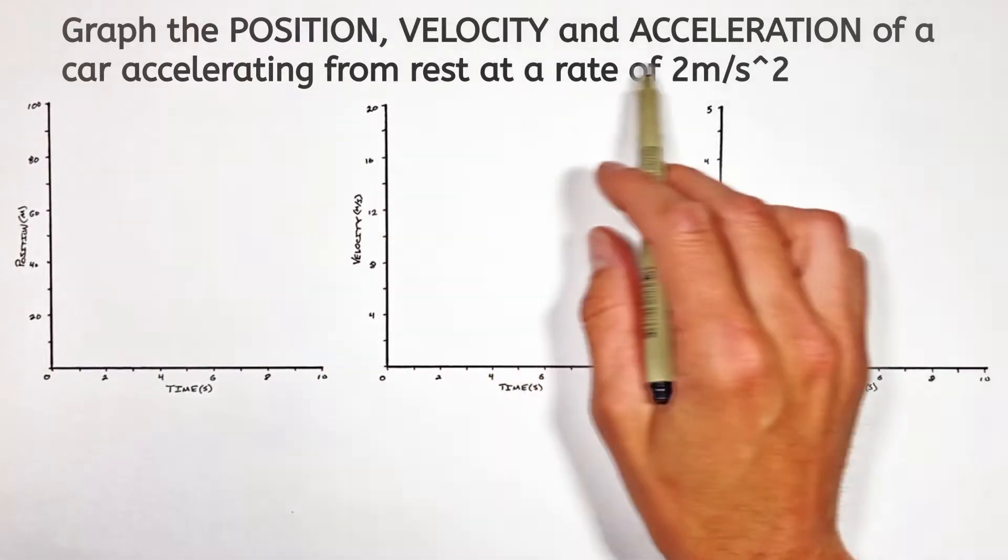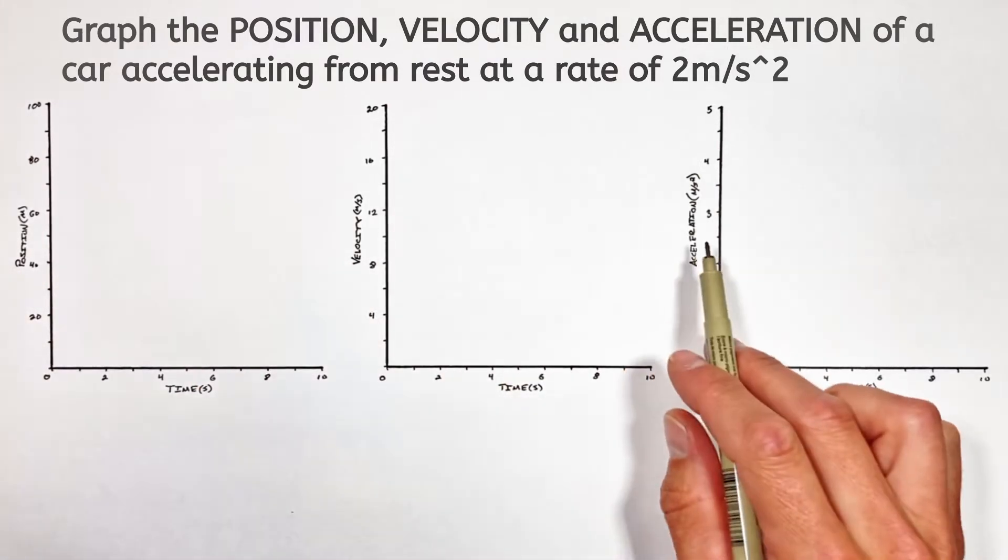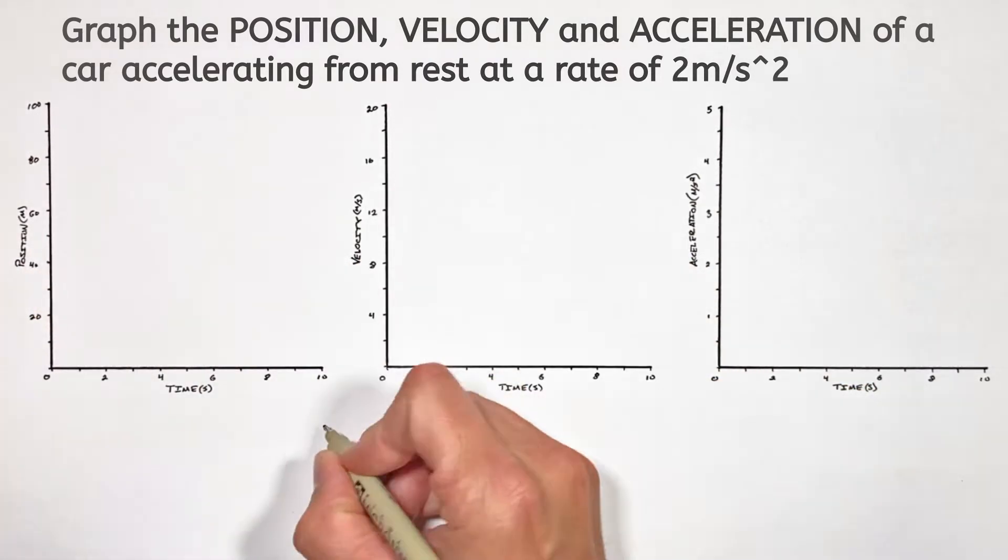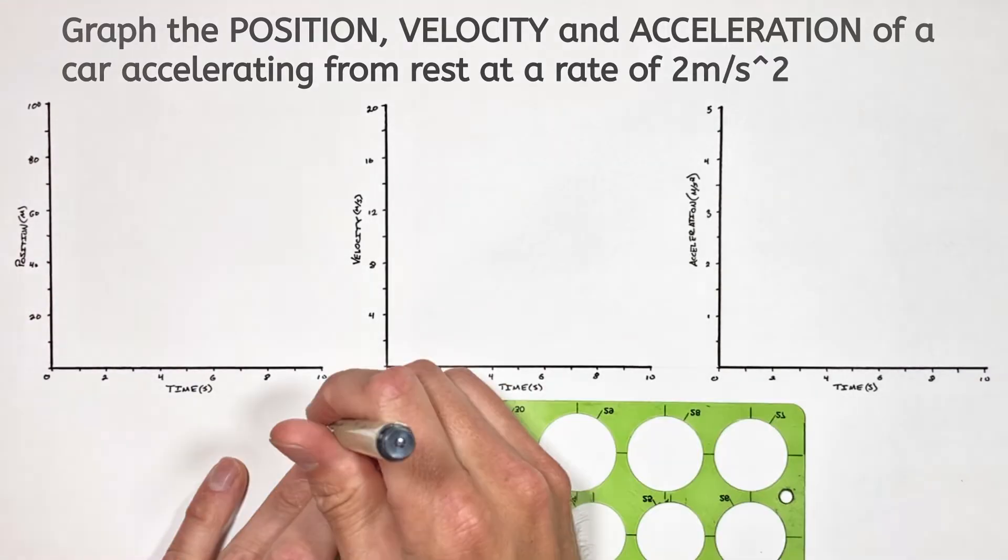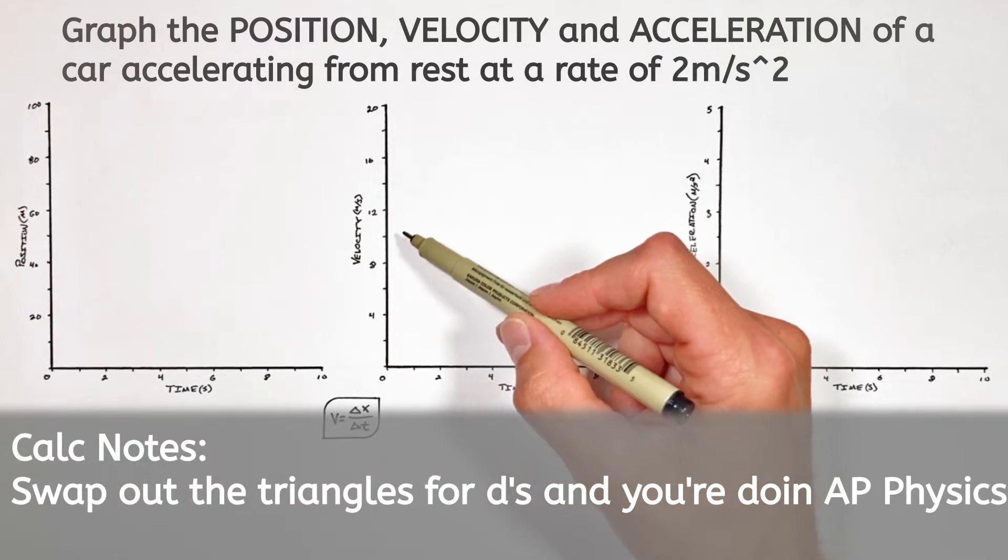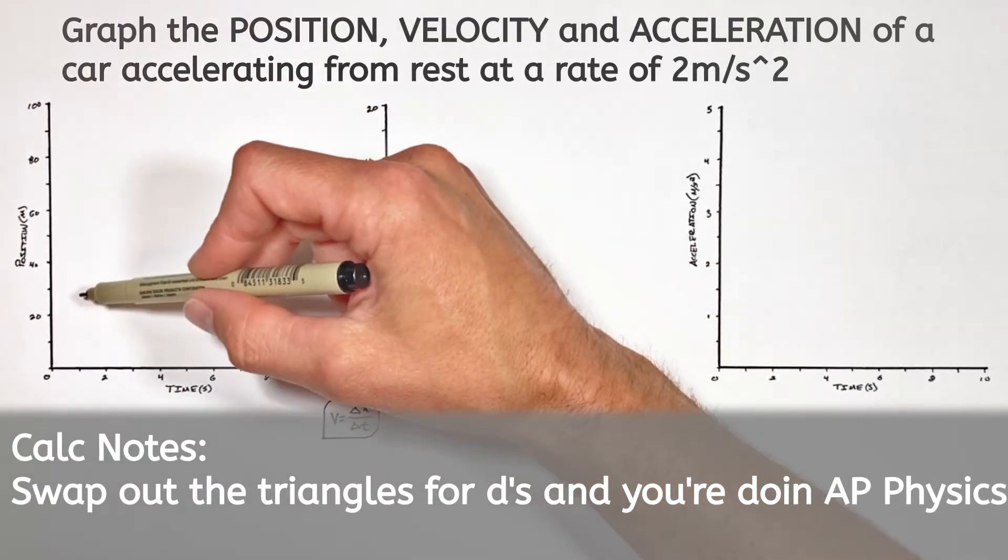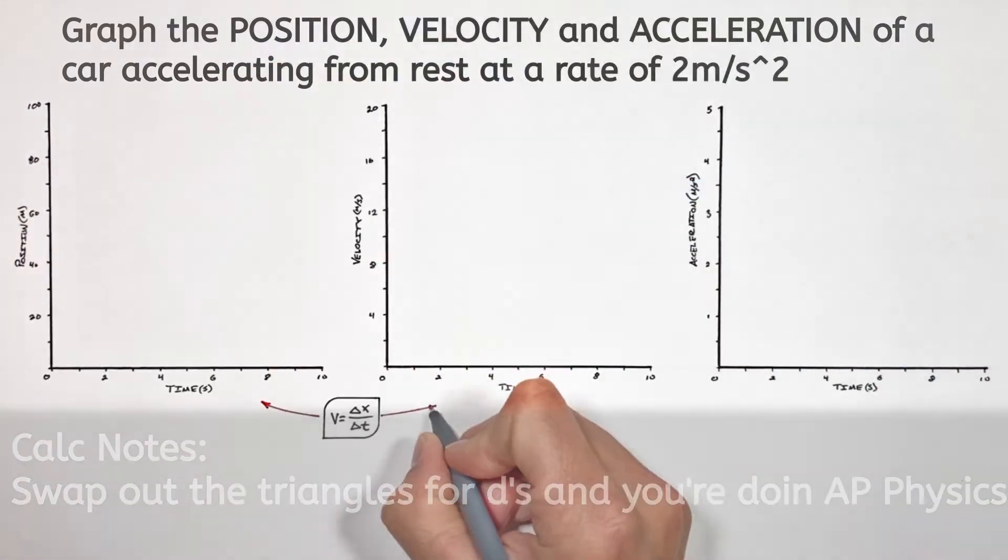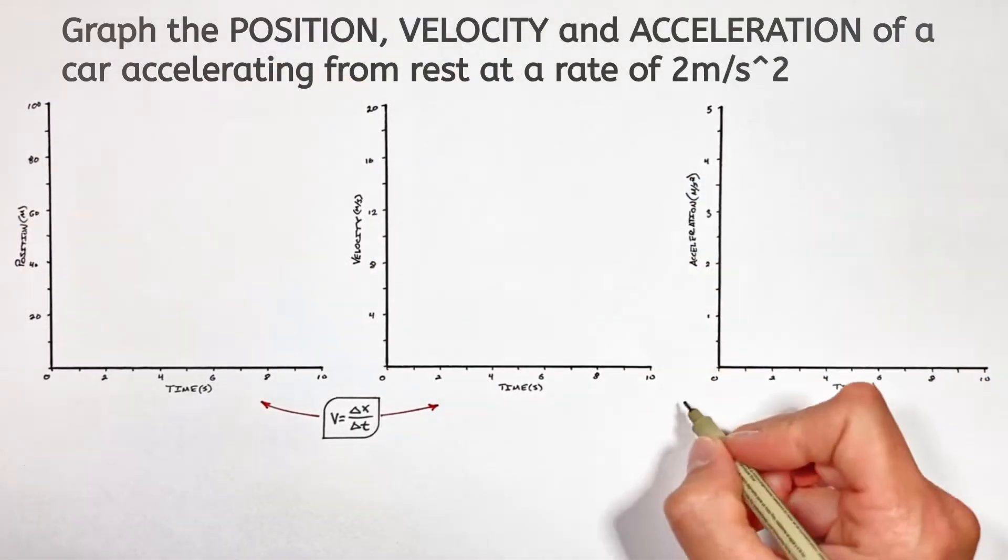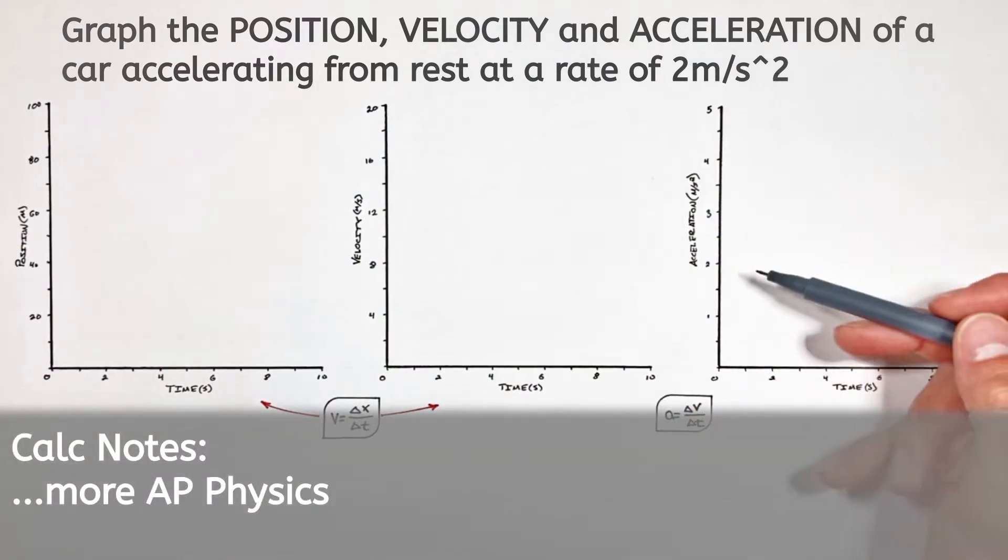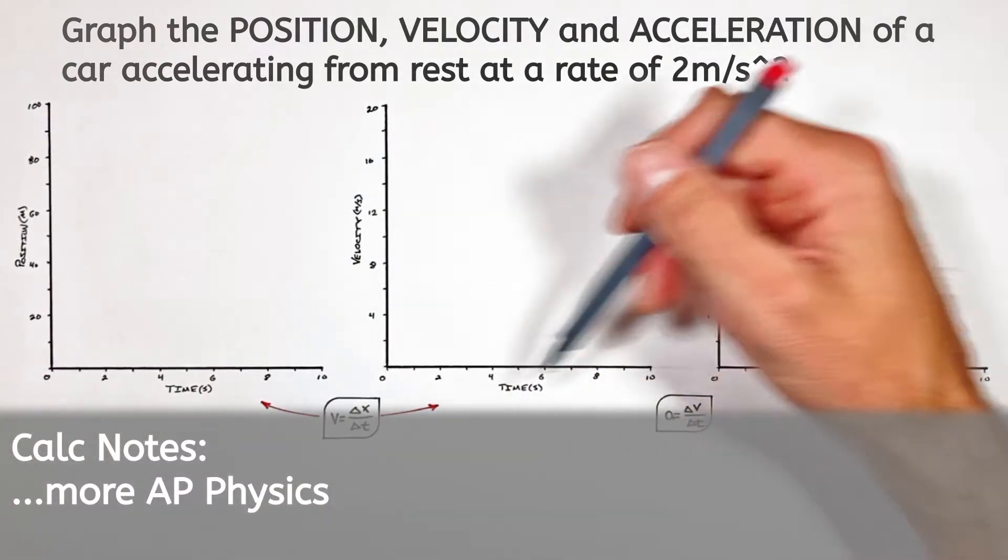Now before we start tackling the actual problem, I want to relate these three quantities to one another. Position and velocity are related through this equation, which tells us that velocity equals the change in position or displacement over a change in time. And velocity and acceleration are related through this equation, which tells us that acceleration produces a change in velocity over some change in time.